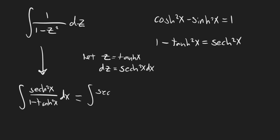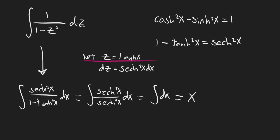So this integral is actually sech squared of x over sech squared of x. Anything over itself is just one, so we've simplified this integral so much that it's literally just the integral of dx, which we know is going to be x. All that's left is to relate x and our original variable z. We know that z equals tanh of x, so if we take the arctanh of both sides — just like solving a regular trigonometric function — the arctanh of z equals x. So this integral, which was equal to x, is actually equal to arctanh of z, and that's our final answer.